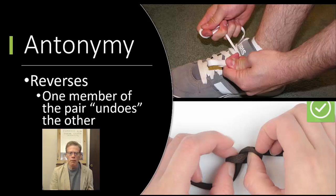Reverses are where one member of the pair undoes the other member. So, for example, tie versus untie.